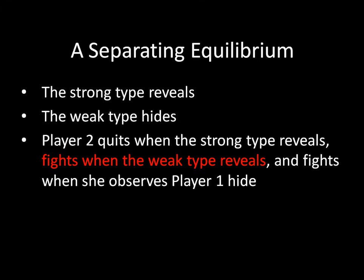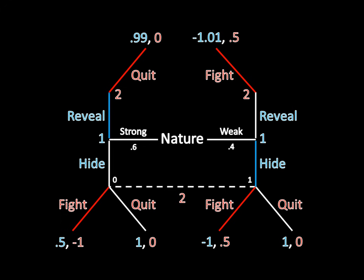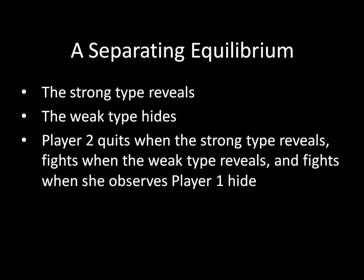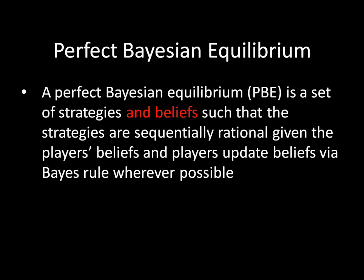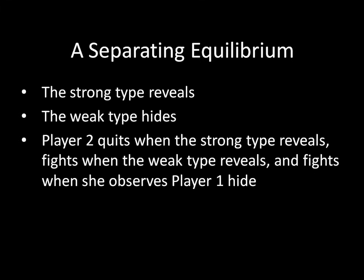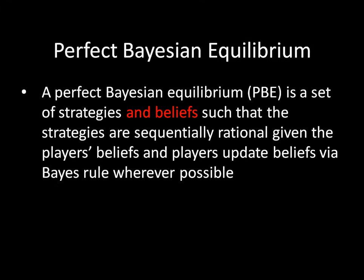And the reason is exactly like what we saw in subgame perfect equilibrium, where what is justifying Player 1 as the weak type hiding the information is the fact that if he were to reveal that information instead, Player 2 is going to fight him — and that is worse for him than hiding. You might think that we're good because we have strategies both on and off the equilibrium path, but in fact we're not all the way there yet. Think back to our definition of perfect Bayesian equilibrium. A PBE is a set of strategies and beliefs — and what we have so far are just strategies, not the beliefs part.